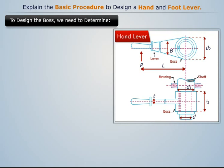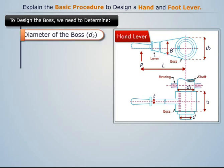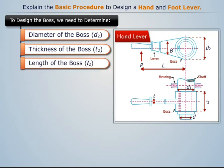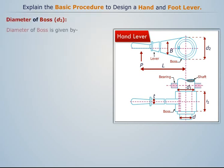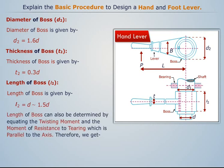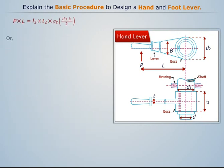Let's now design the boss. For this, we need to determine its diameter, thickness, and length. Diameter of the boss is given by a known expression. Thickness of the boss is given by another expression. Length of the boss can also be determined by equating the twisting moment and the moment of resistance to tearing, which is parallel to the axis. Therefore, we get the corresponding expression.